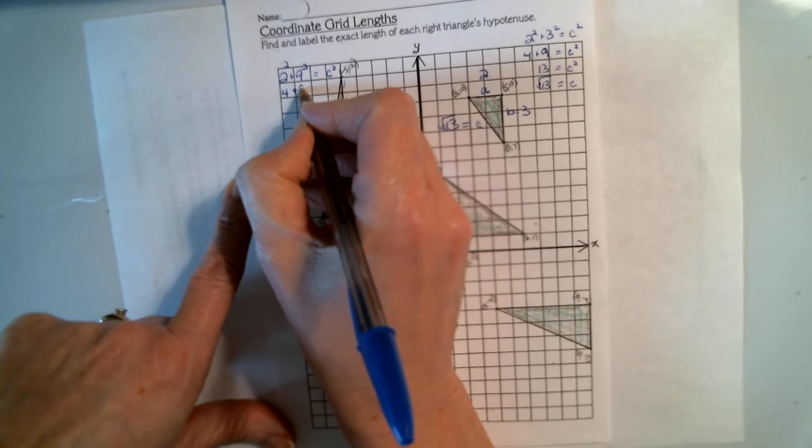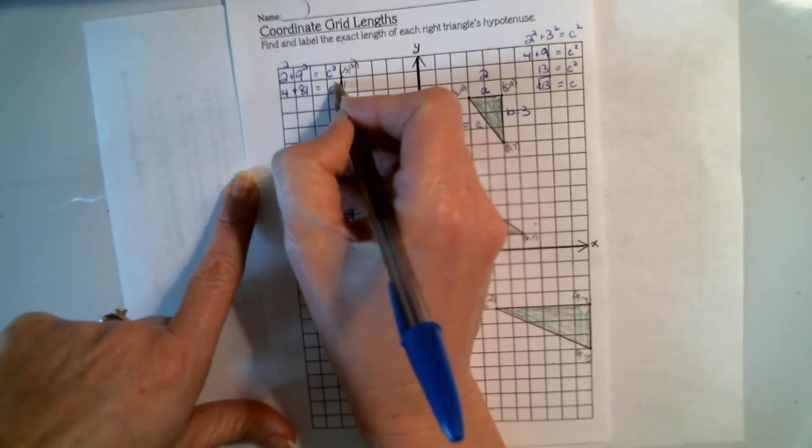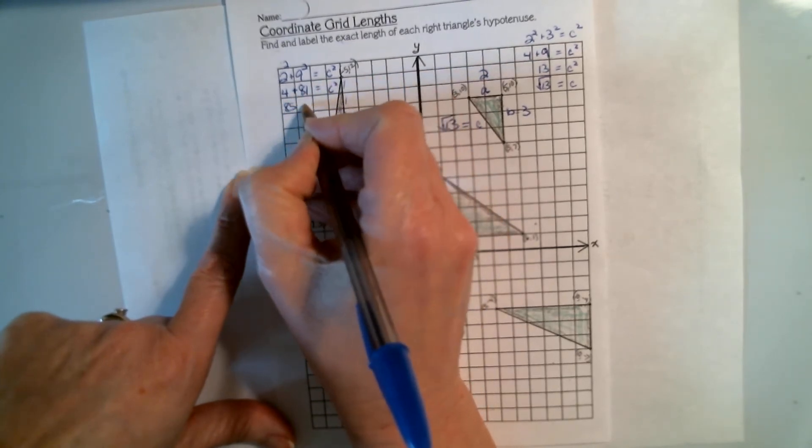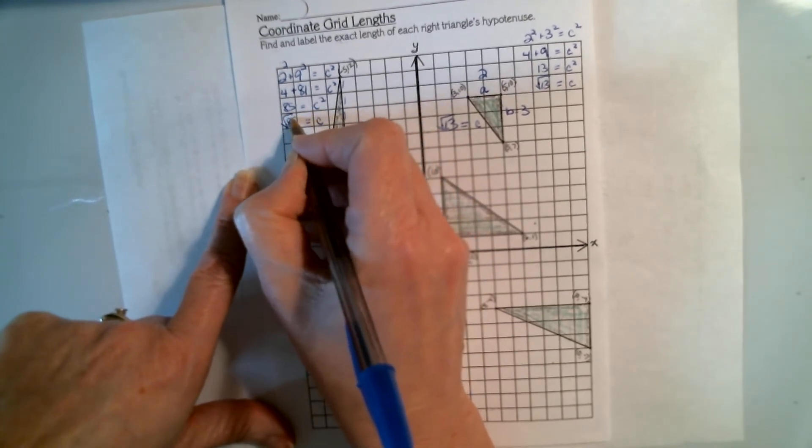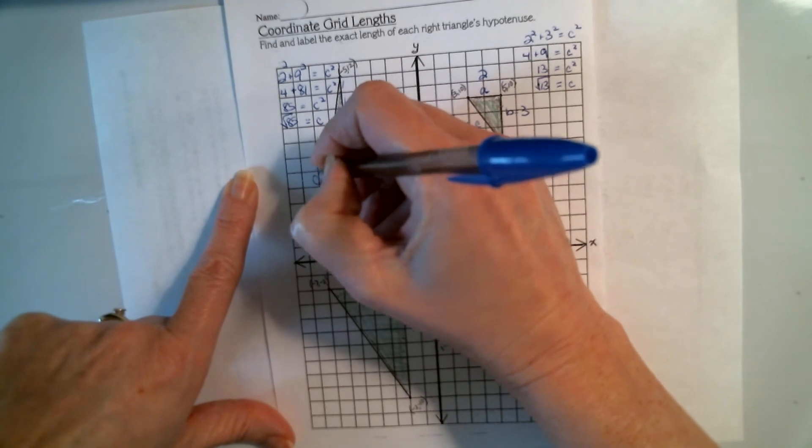4 plus 81 equals c squared. 85 equals c squared. So c is the square root of 85. Exactly.